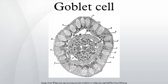The main role of goblet cells is to secrete mucus in order to protect the mucosae where they are found. Basal secretions represent the normal base level secretion of mucus, which is accomplished by cytoskeletal movement of secretory granules.